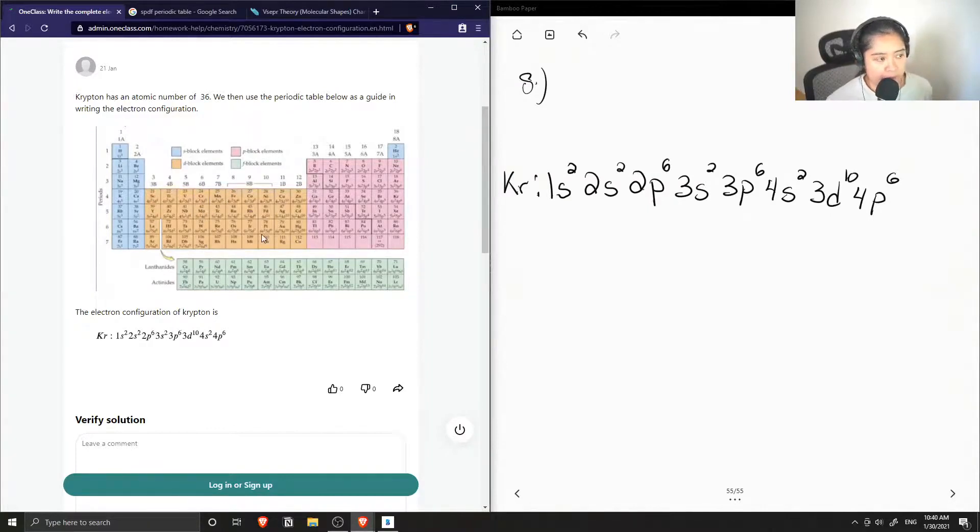So sometimes, well most of the times with transition metals, our 4s orbital would actually be lower than our 3d orbital. So we sometimes have to be careful with that,